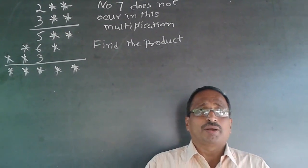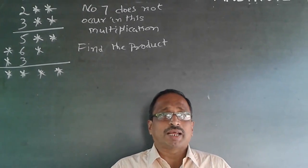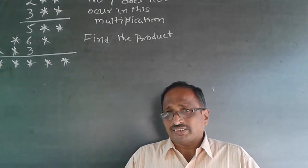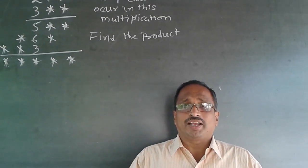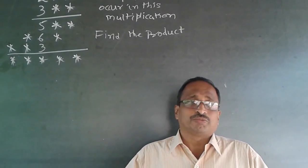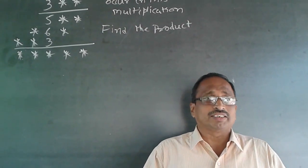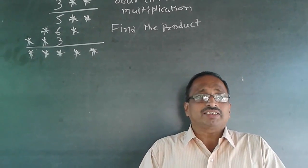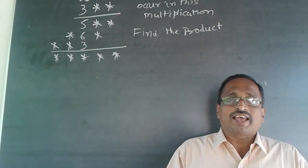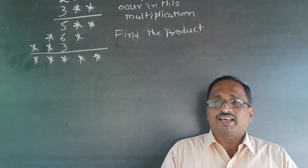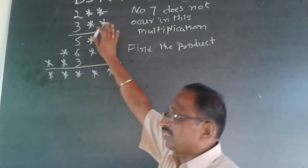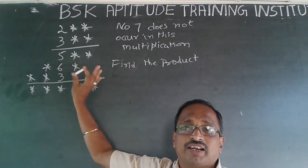This is a simple problem — more or less a puzzle, or logical reasoning. As far as aptitude is concerned, it is not more than 8th standard level of maths. Don't fear it. What is required is a higher level of thinking. We have done 3-digit by 3-digit multiplication in 5th standard itself.